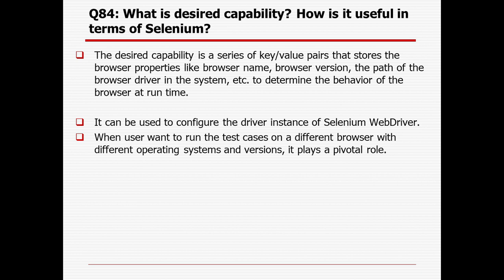What is Desired Capability and how is it useful in Selenium? Desired Capability is a series of key-value pairs that stores browser properties like browser name, browser version, the path of the browser driver in the system, etc., to determine the behavior of the browser at runtime. When dealing with Chrome, Firefox, or IE, we need to store browser information. It can be used to configure the driver instance of Selenium WebDriver. When the user wants to run test cases on different browsers with different operating systems and versions, it plays a pivotal role.